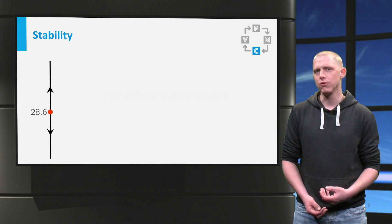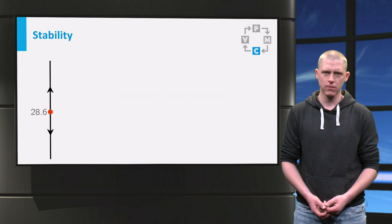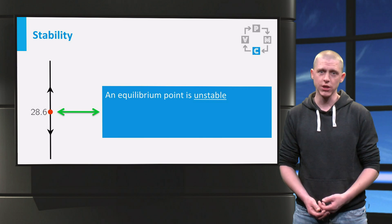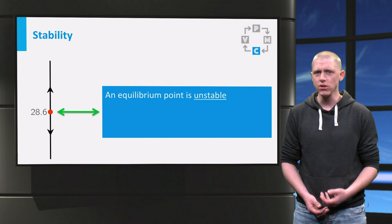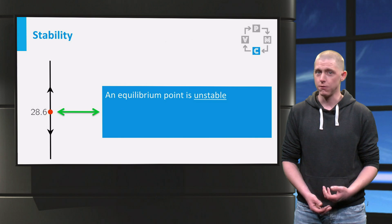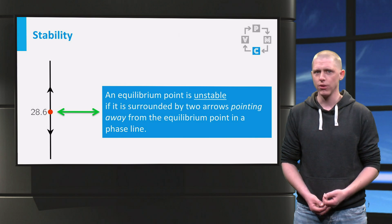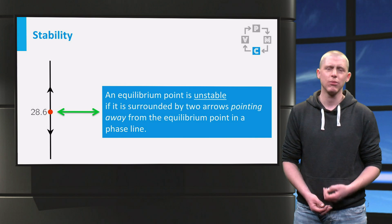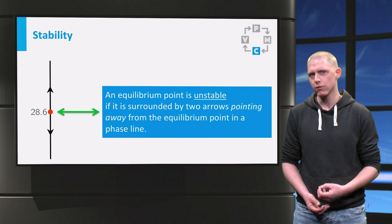The value of 28.6 fish is what is called an unstable equilibrium point of the differential equation. In a phase line, an unstable equilibrium point is always surrounded by two arrows pointing away from the equilibrium point.